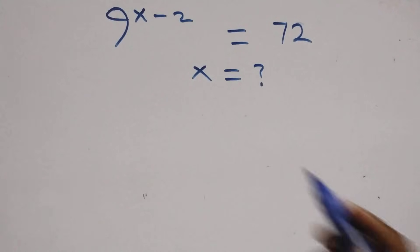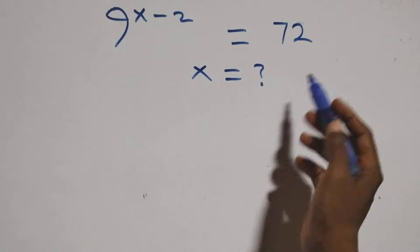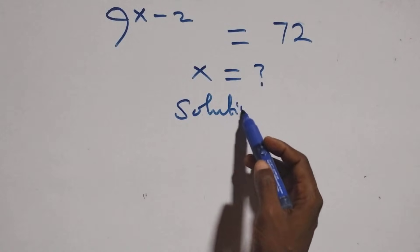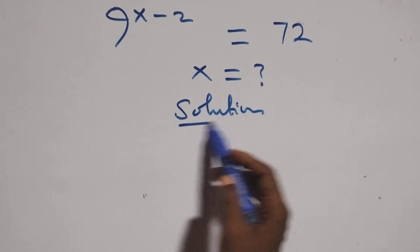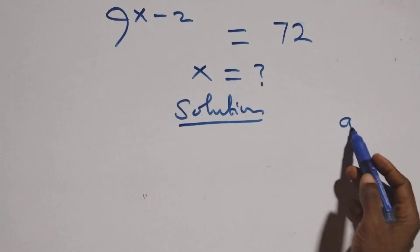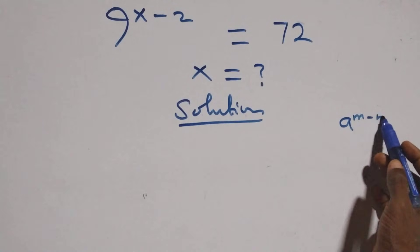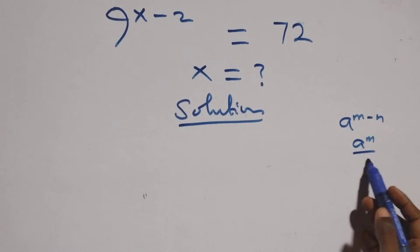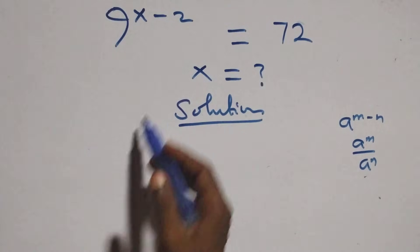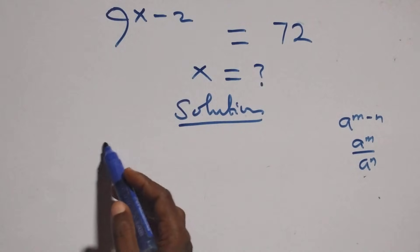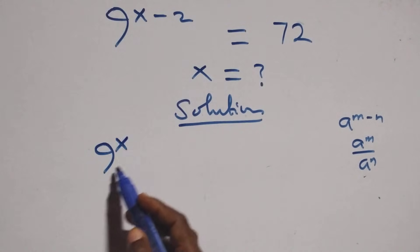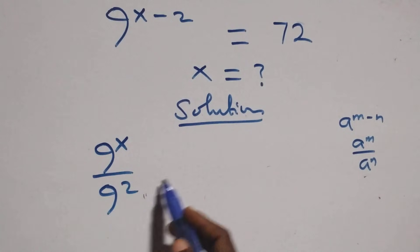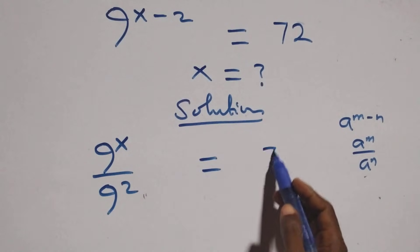Hello, you are welcome. How to solve this nice exponential equation. What we have here: a raised to power n minus n, the same thing as a raised to power n. This becomes 9 raised to power x over 9 squared equals 72.